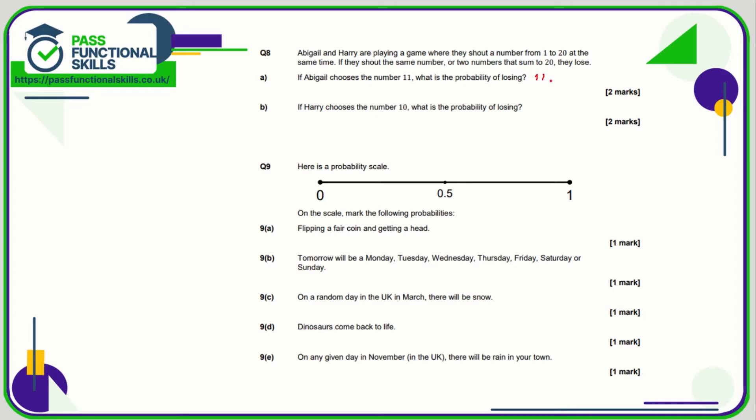So therefore the probability is he could shout two numbers out of the 20 that would cause Abigail to lose. And 2 out of 20 can also be written as 1 out of 10.